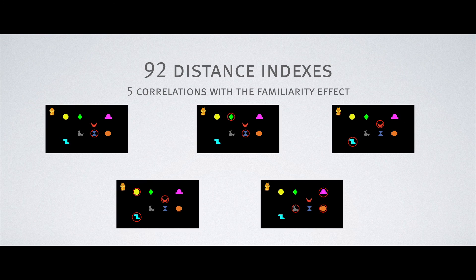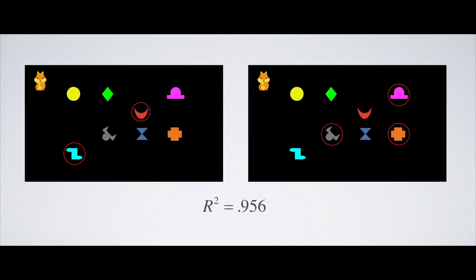All in all, considering all individual shapes and all possible pairs and triplets of them, we computed 92 of these distance indexes. We observed that five of them were strongly correlated with the familiarity effect measured during the test phase. Making a regression analysis, we identified two of these indexes as the best predictors of the familiarity effect at test.